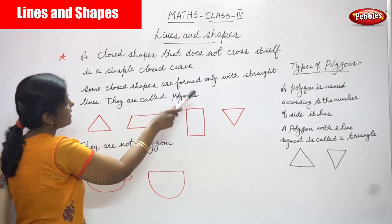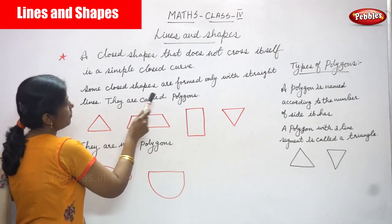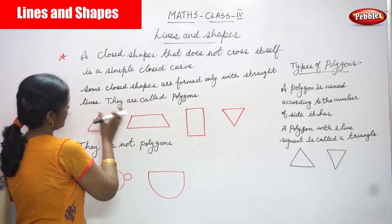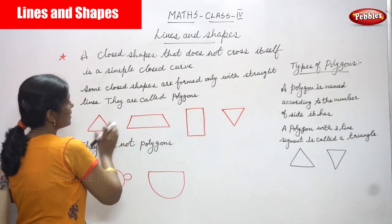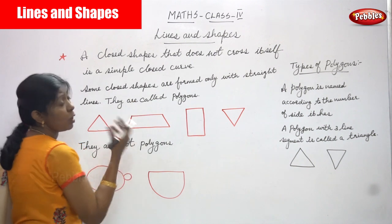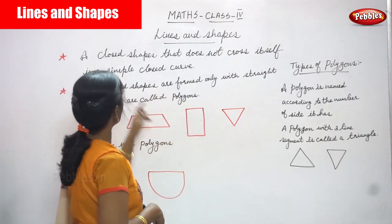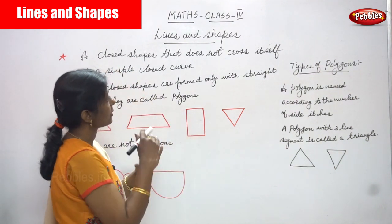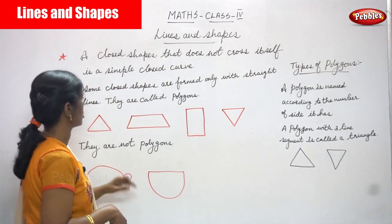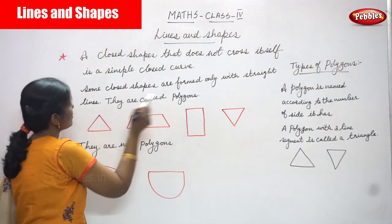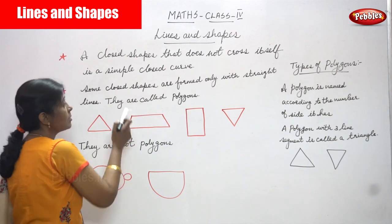Some closed shapes are formed only with straight lines — they are called polygons. These are examples of closed shapes, and since they are formed only with straight lines, they are called polygons.